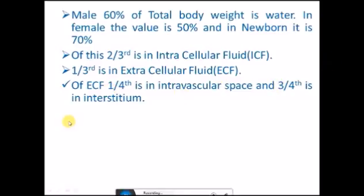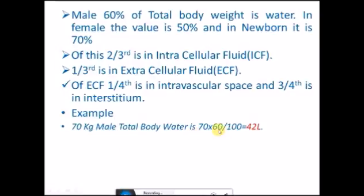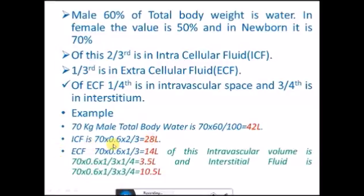I'll explain all this by an example. Let us assume a 70 kg male. Total body water is 60 percent of 70, so 42 liters. Intracellular fluid is two thirds, so 28 liters. ECF is one third of 42, that is 14 liters. Of this, intravascular volume is one fourth of ECF, that is 3.5 liters. A 70 kg person has 3.5 liters of blood in the intravascular space. The interstitial fluid is 10.5 liters.